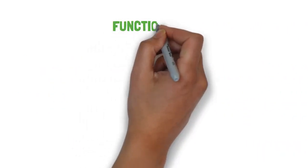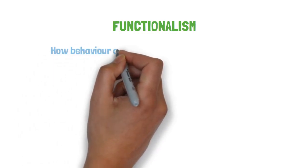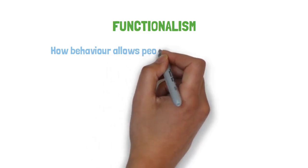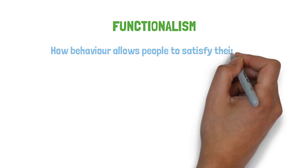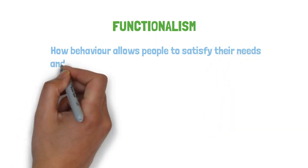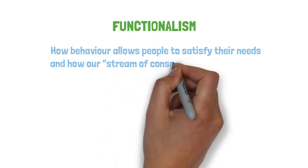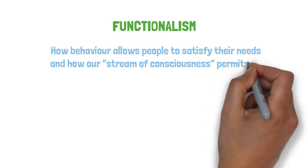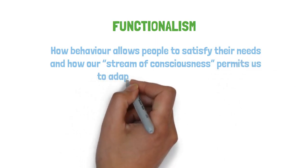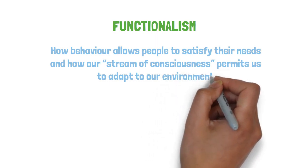Functionalists examined how behavior allows people to satisfy their needs and how our stream of consciousness permits us to adapt to our environment. Unlike structuralists, functionalists focused on how the mind allows people to function in the real world, how people work, play, and adapt to their surroundings.